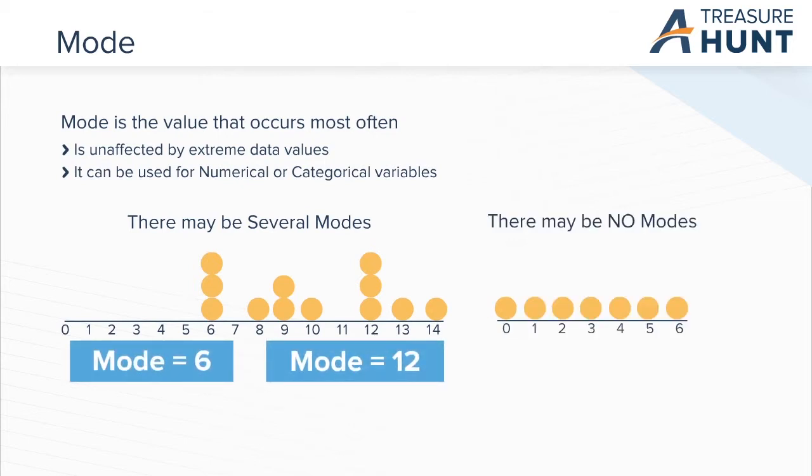Now consider the diagram on the right. All numbers have the same frequency. Each occurs once. In this example, there is no mode.